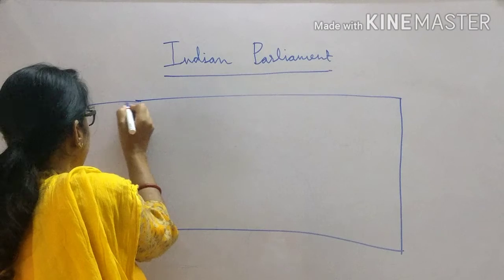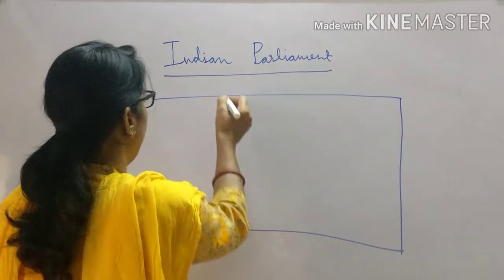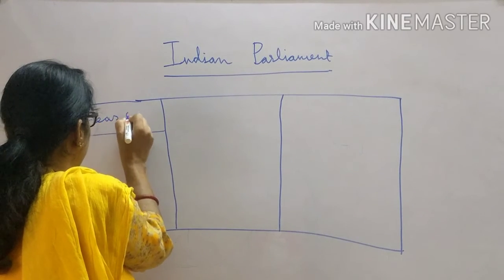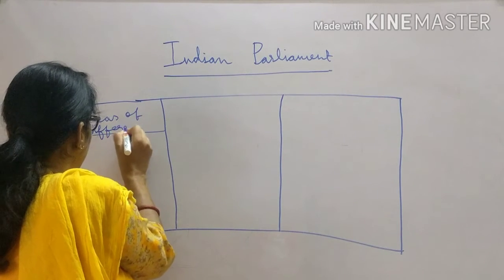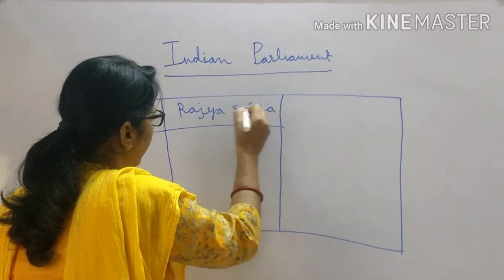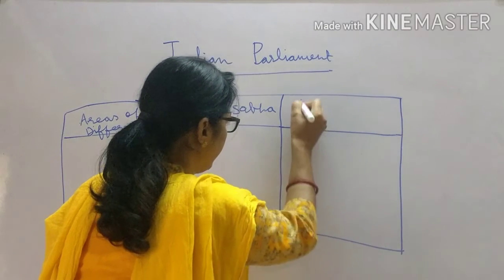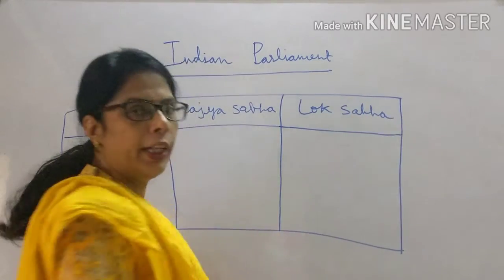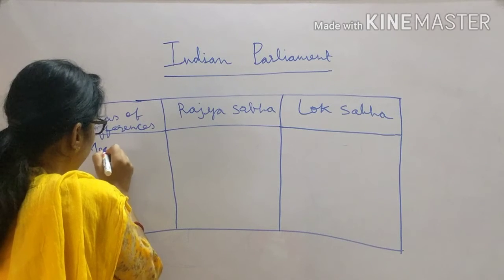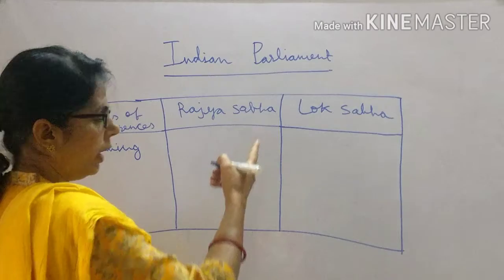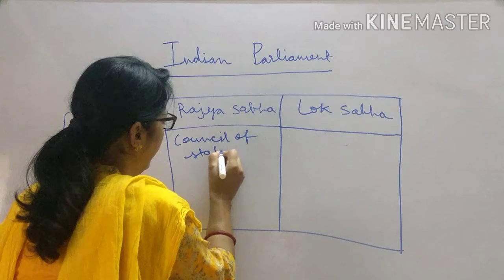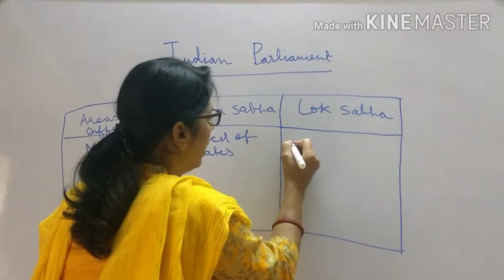Now let us compare Rajya Sabha and Lok Sabha using a table. First, the areas of differences: their meanings are different. Rajya Sabha means 'Council of States,' while Lok Sabha means 'Assembly of the People.' Rajya Sabha is the upper house of Indian Parliament and Lok Sabha is the lower house of Indian Parliament.